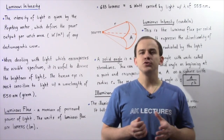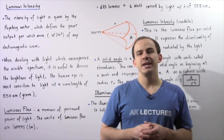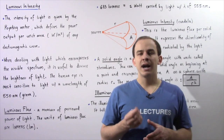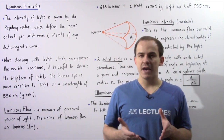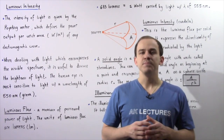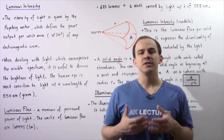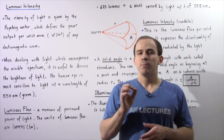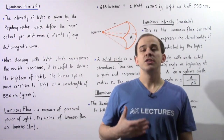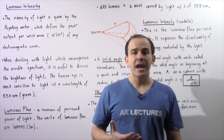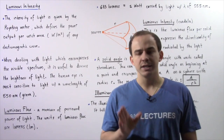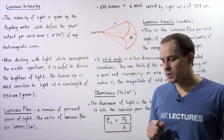The intensity of electromagnetic radiation was defined by using a concept known as the Poynting vector. The Poynting vector is simply the power output of an electromagnetic wave per unit area. It tells us the rate of change of energy per unit area of any electromagnetic wave.